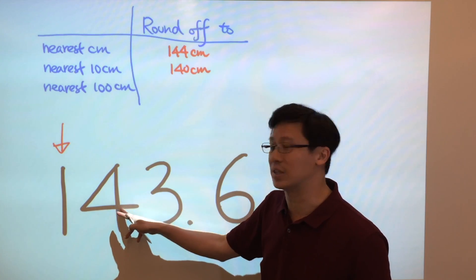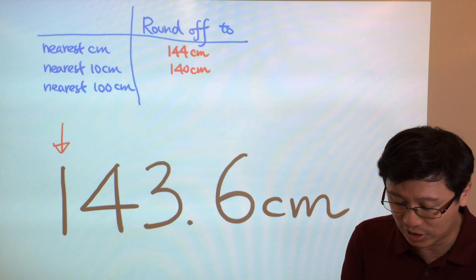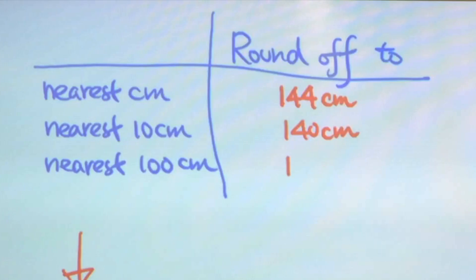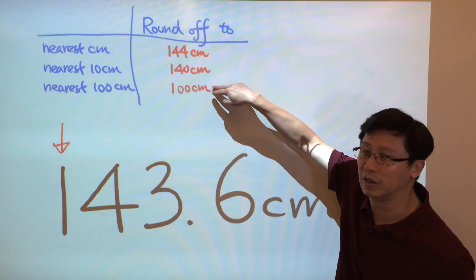Now we just leave it because it is less than or equal to 4. And we just need to consider the 100 cm. We just leave 4, 3, and 6. And don't forget the unit in the final answer.